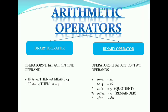Binary operators act on two operands: a plus b, a minus b, a into b, a divided by b. The difference between the slash symbol and the percentage symbol is that slash is division, while percentage is the modulo symbol — it gives the remainder. For example, 20 divided by 4 is 5, but 20 modulo 4 is 0 because the remainder is 0.